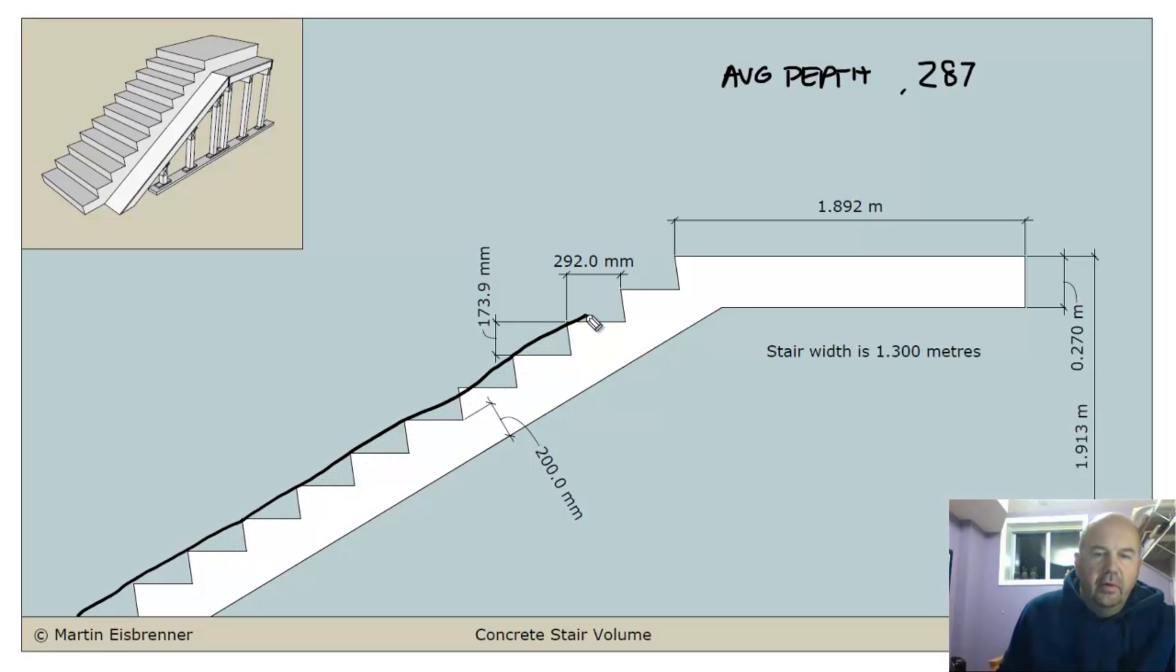Line of flight, one of the terms we use to describe an imaginary line through the nosings of each one of the treads. And I want to figure out the length of that line. That's going to give me the length of the stair. Now, the easy way to do this is to figure out the distance between these points here, and then just multiply by the number of risers.